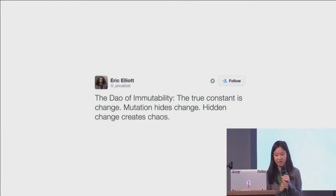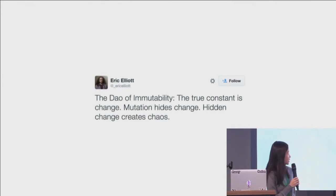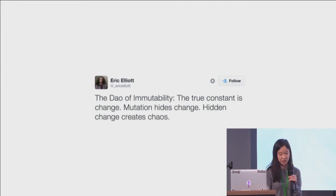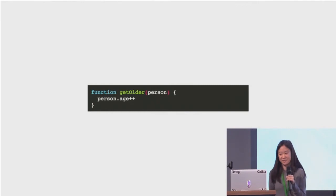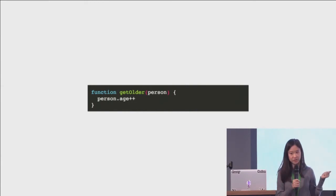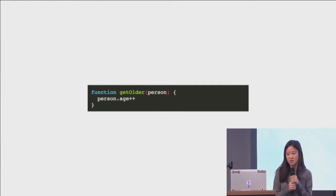Eric has this great quote: 'The dial of immutability — the true constant is change. Mutation hides change. Hidden change creates chaos.' If you think about the previous code, even if you compare the same person object to the previous person object without a change, you can't tell what is being changed. The change is actually very, very quiet, and you don't have any proof that the person's age is getting incremented.